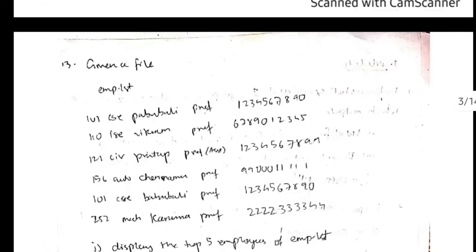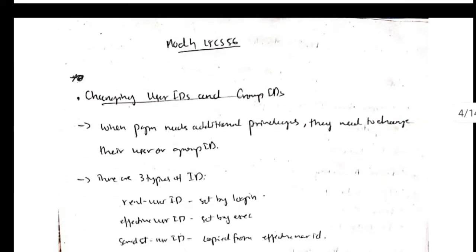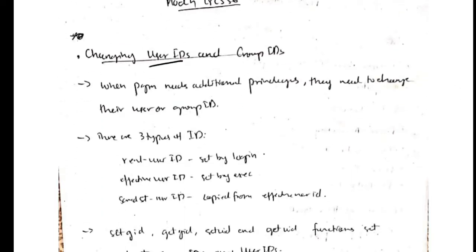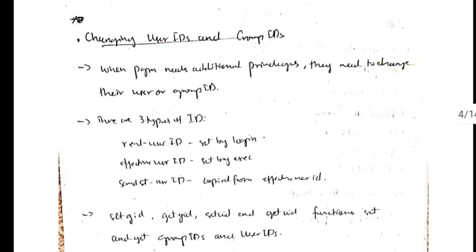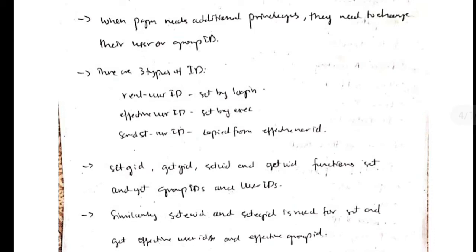Let's get started with the first topic which is the user ID and group IDs. Sometimes you want to change the user ID and group ID permissions to access some files. Before that, let's see the different types of IDs: the real user ID, effective user ID, and saved user ID.